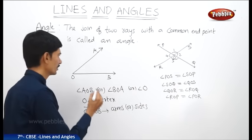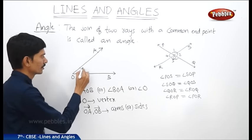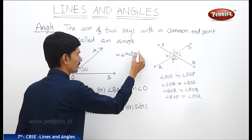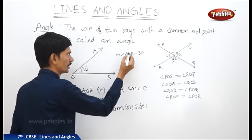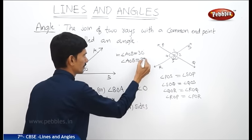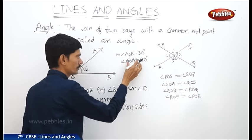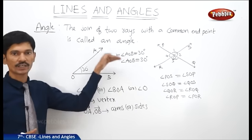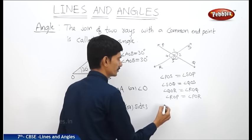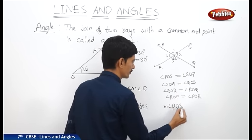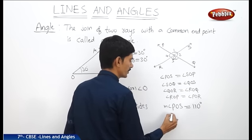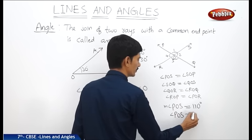For example, the measure of angle AOB is 30 degrees. We write: measure of angle AOB equals 30 degrees. But in this chapter, we simply write angle AOB equals 30 degrees, which represents that the measure of angle AOB is 30 degrees. Similarly, if the measure of angle POS is 110 degrees, we write angle POS equals 110 degrees.